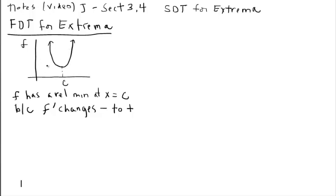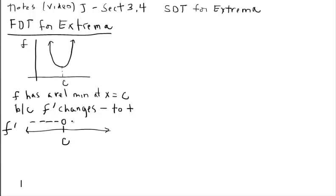If we had an equation for F, when we found the derivative we would locate our critical numbers and put those on our F prime number line, indicating whether they're zeros or does-not-exist critical numbers. We can see that all these slopes are negative to the left and positive to the right. So the F prime number line shows a sign change from negative to positive at C — confirming a relative minimum.